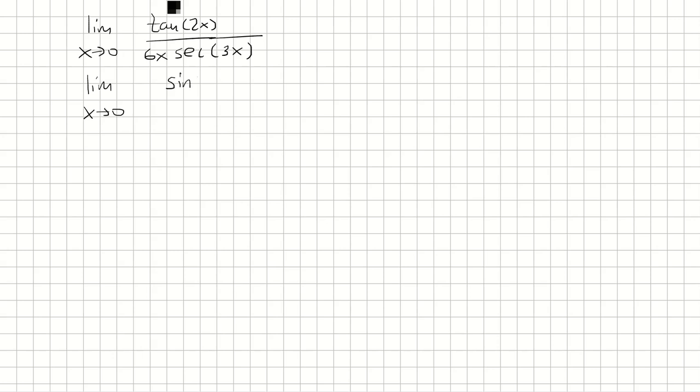Tangent 2x is sine 2x over cosine 2x, and then secant 3x is 1 over cosine 3x.